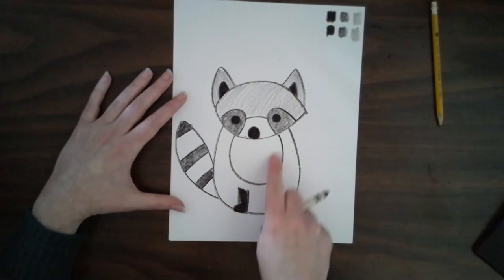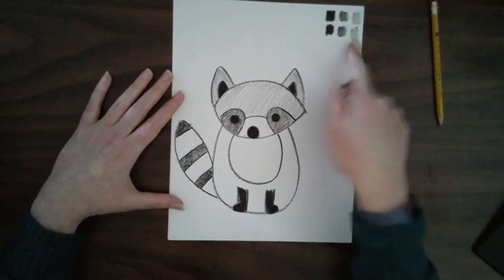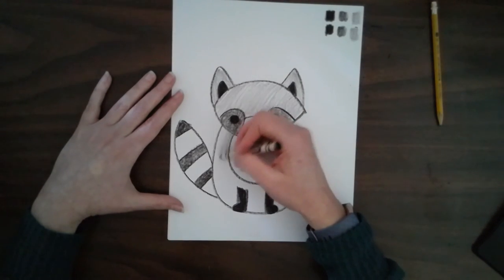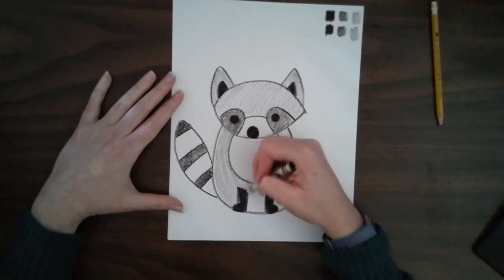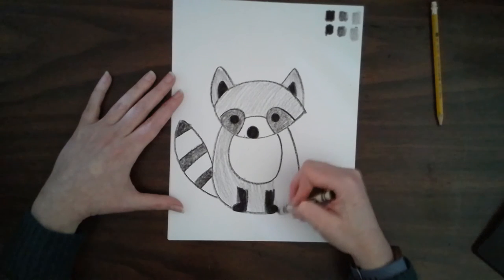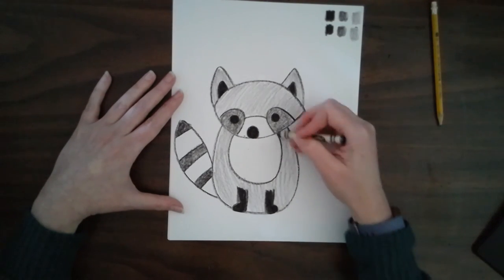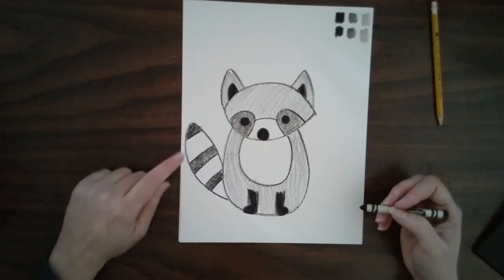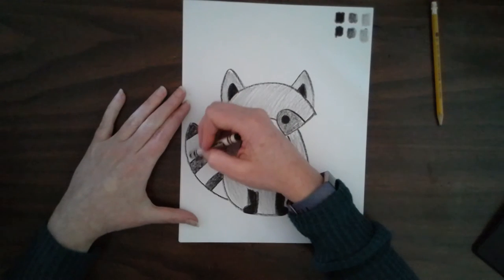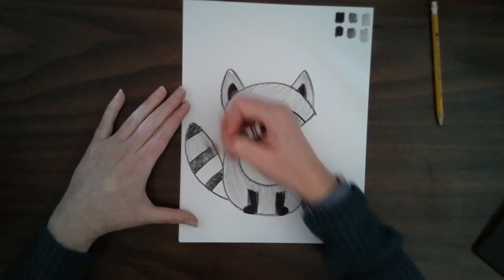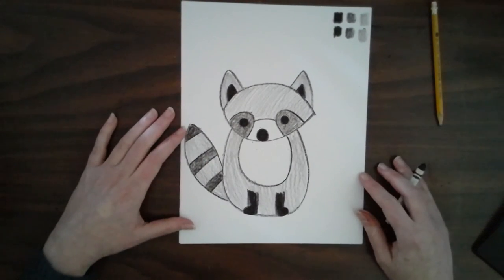Now I'm going to leave his belly white too. And I'm going to do his body with my light value. So don't push too hard with your crayon when you're doing the light value. And the last thing I'm going to color with my light value are the other parts of my tail. And there you go.